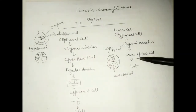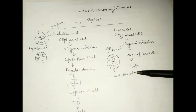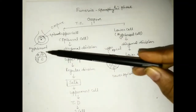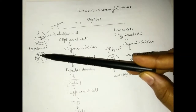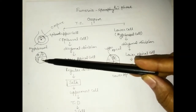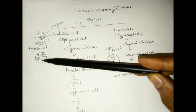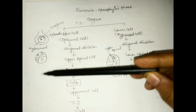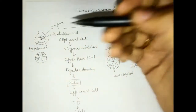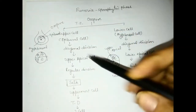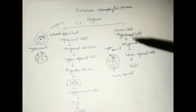The hypobasal cell undergoes diagonal divisions. The upper epibasal cell also undergoes diagonal division. The lower cell will become the hypobasal cell itself. The epibasal cell will also undergo formation — divided in the right and left direction. The lower part goes further to form the foot.